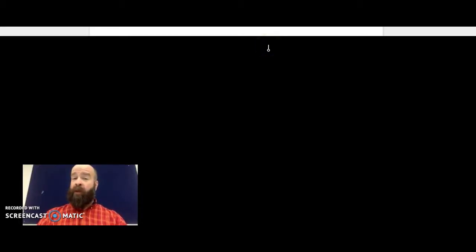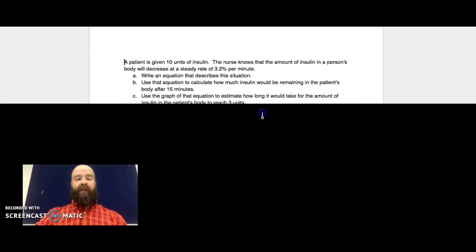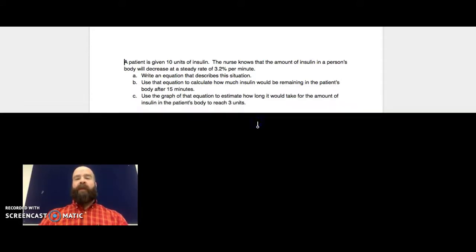Hey everybody, I just wanted to run through a quick summary of the type of problem that we've done today with exponential growth or decay, a word problem, and show you one thing that we didn't get the chance to do in class today. So I've written a problem here that says a patient is given 10 units of insulin. The nurse knows that the amount of insulin in a person's body will decrease at a steady rate of 3.2% per minute.